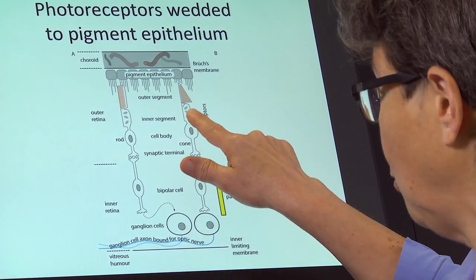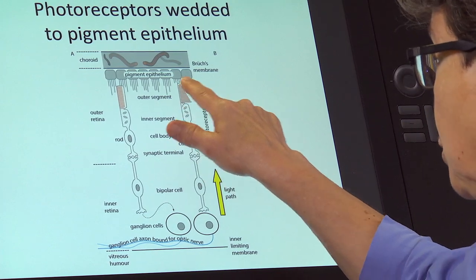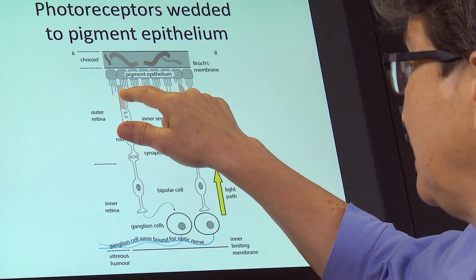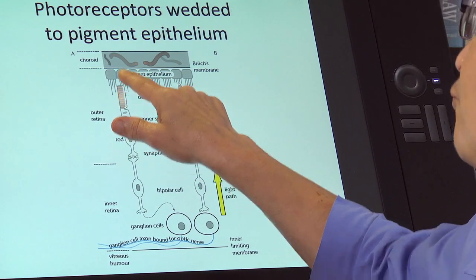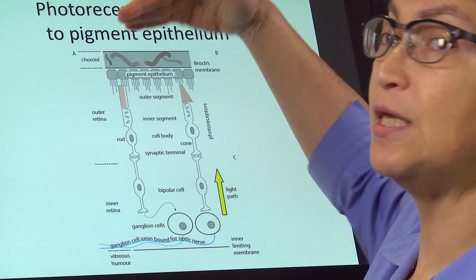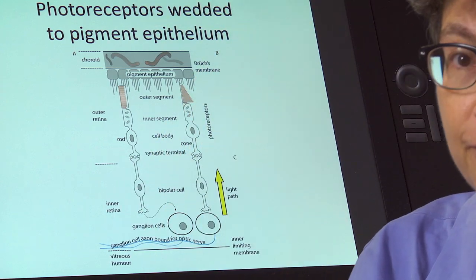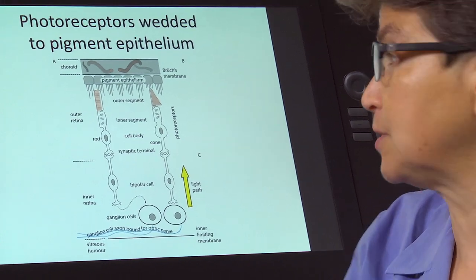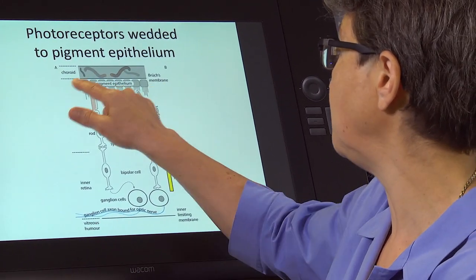But it has to go all the way through the photoreceptor before it reaches what's called the outer segment of the photoreceptor, which is the very last thing that you reach before you get to essentially the glial complement, one of the major types of glial cells in the retina. And that's the pigment epithelium.